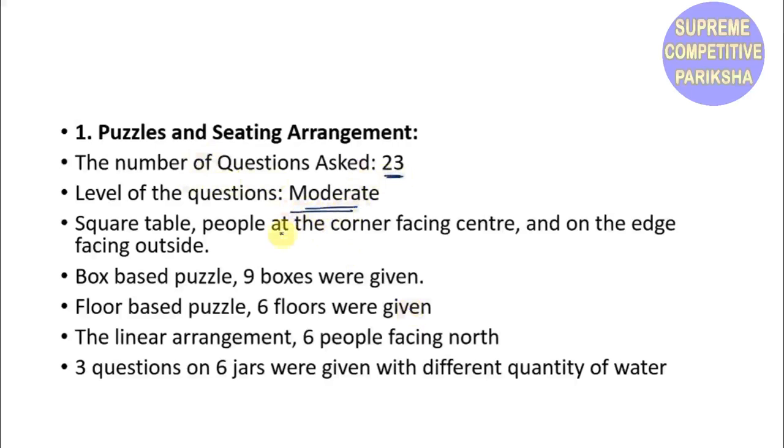For Puzzles and Seating Arrangement, the total number of questions asked was 23 with moderate level difficulty. There was a square table arrangement with people at corners facing center and people at edges facing outside. A box puzzle with 9 boxes was given, floor-based puzzles with 6 floors, and linear arrangement with 6 people facing north. There were 3 questions on 6 jars with different quantities of water.